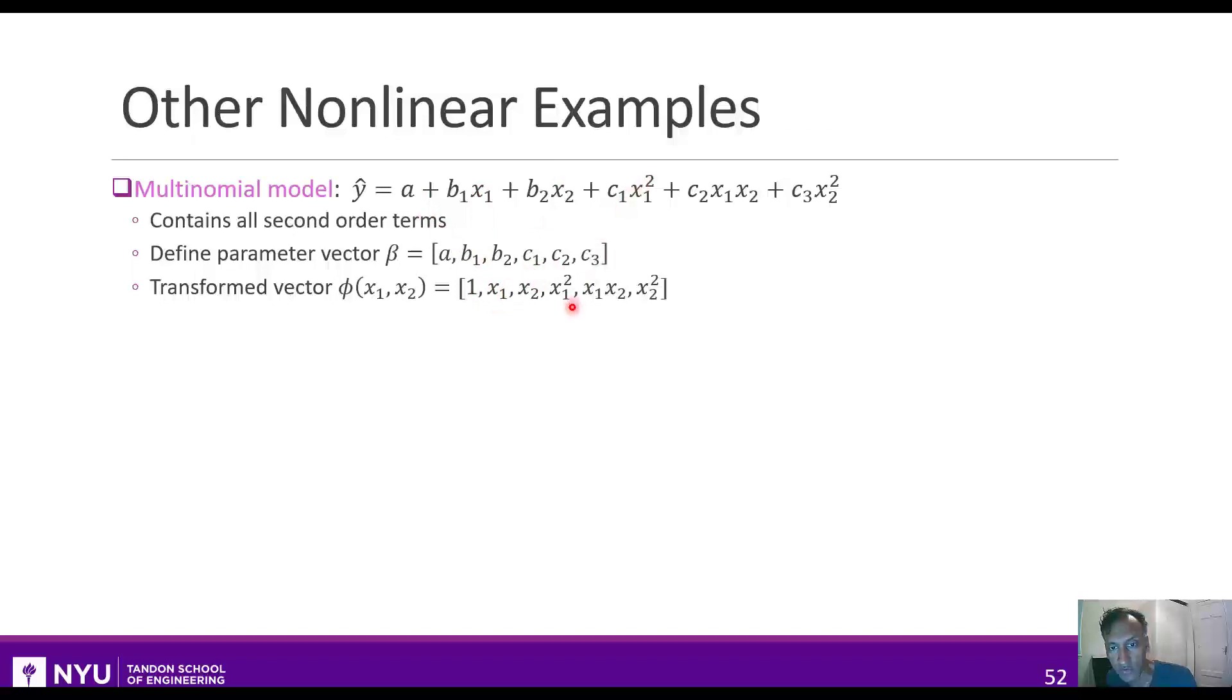And then we just define the basis functions to be the corresponding nonlinear functions for those coefficients, namely a constant term here, terms with the x1, x2, and then the terms with the second order terms, the x1 squared, the x1, x2, and the x2 squared. Again, note that all of these basis functions are nonlinear functions of x1 and x2, some of them using both x1 and x2 together.